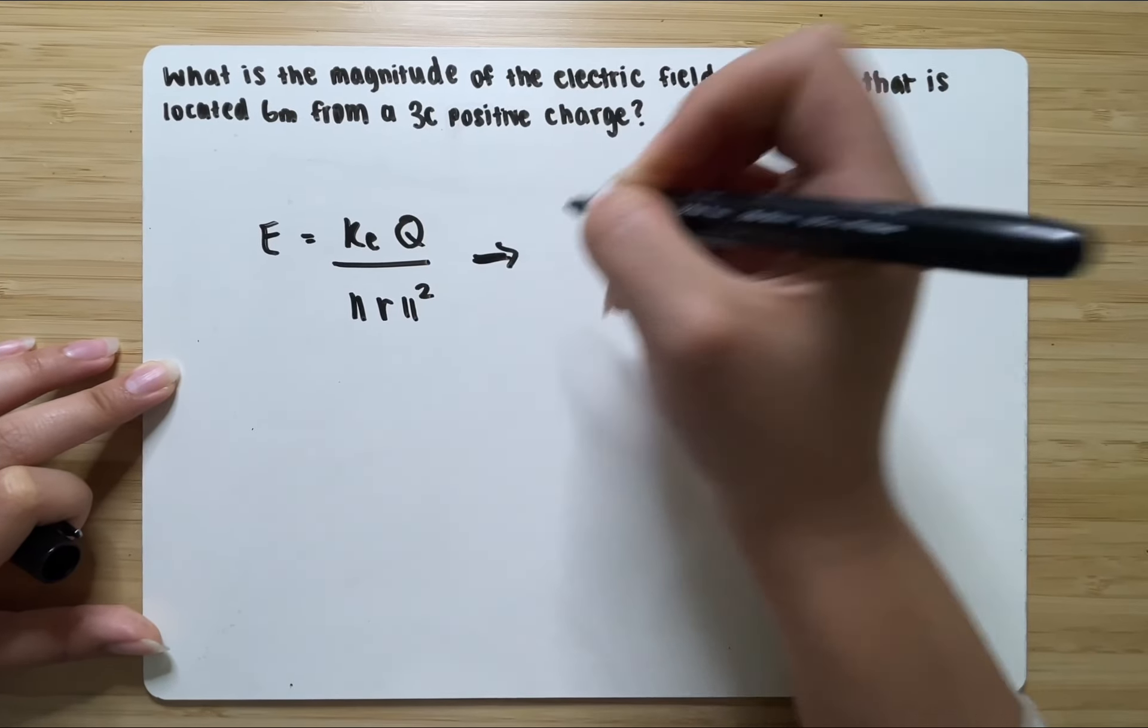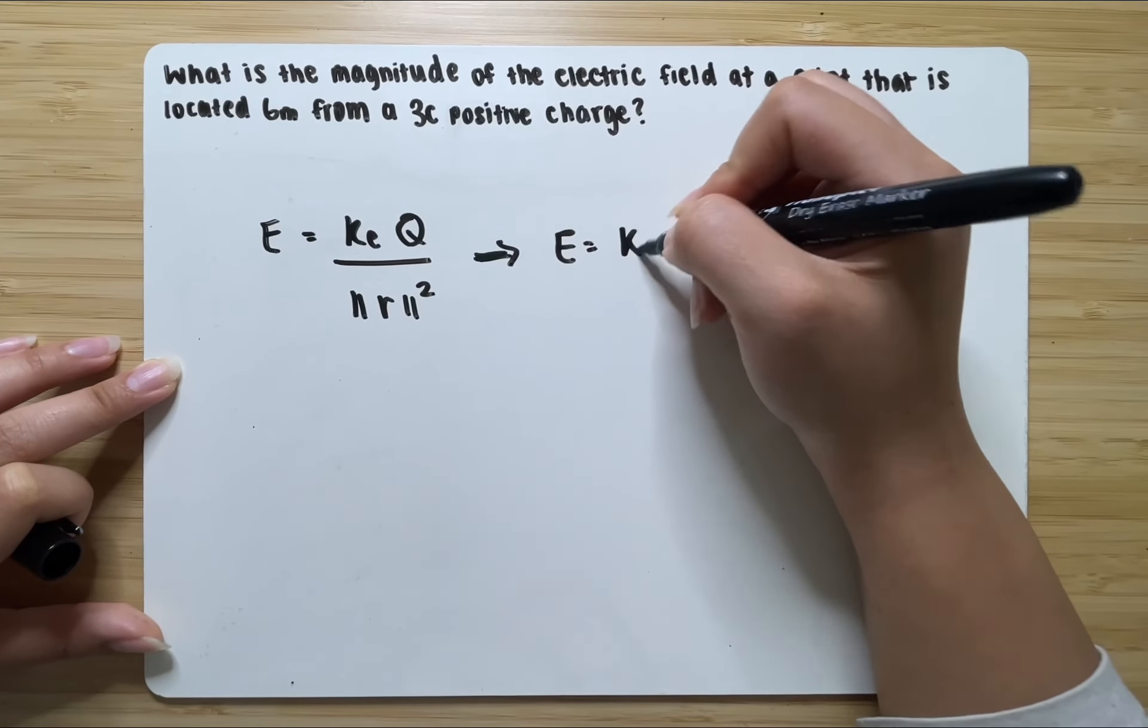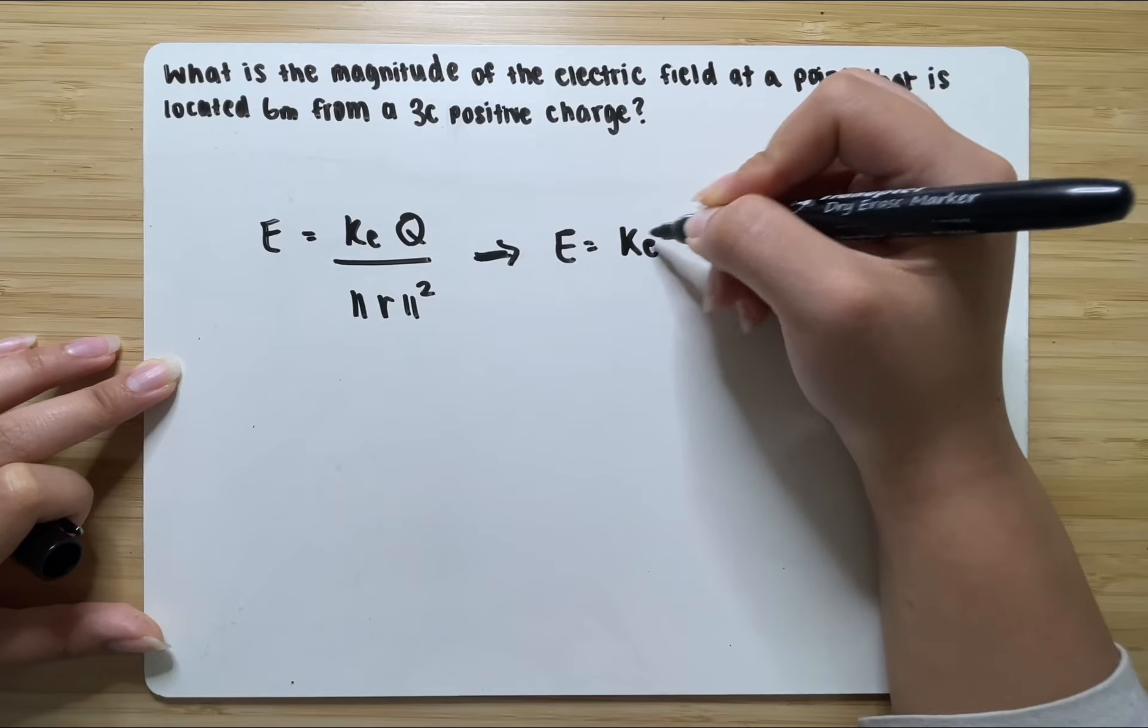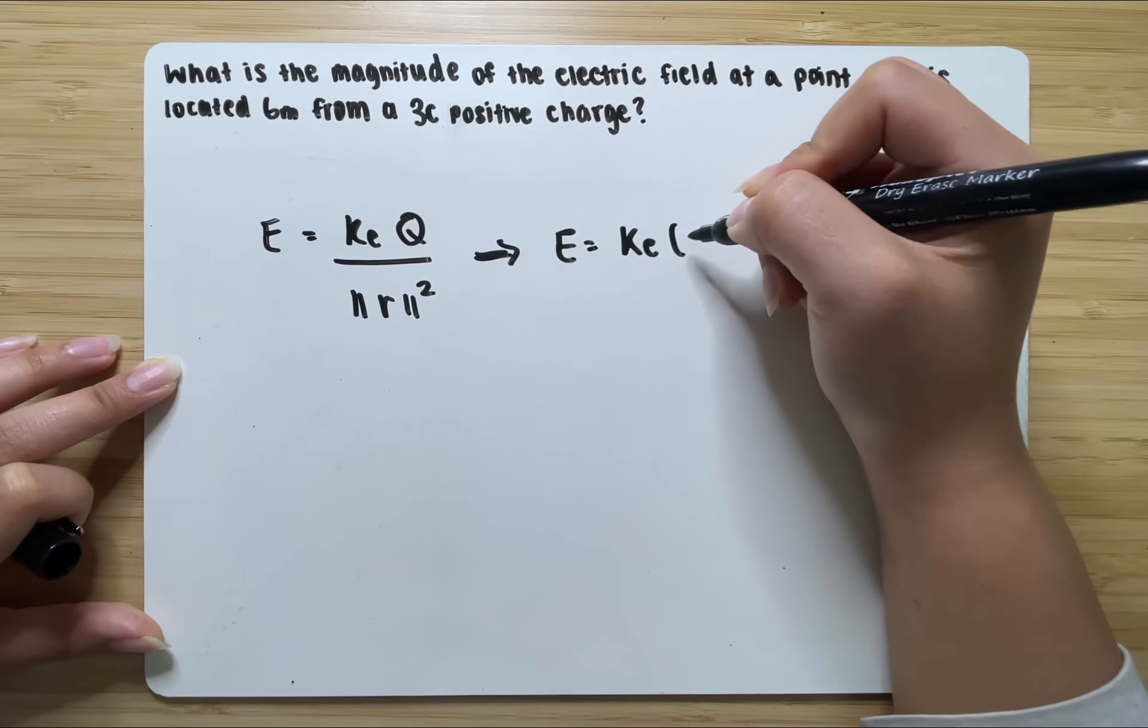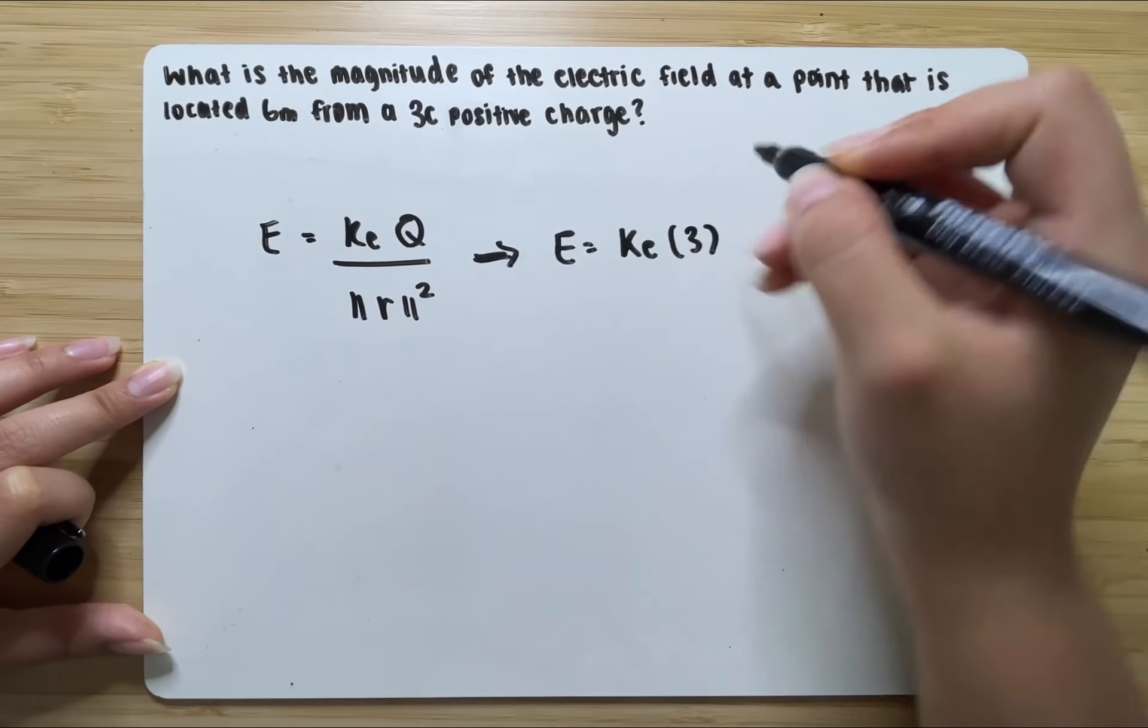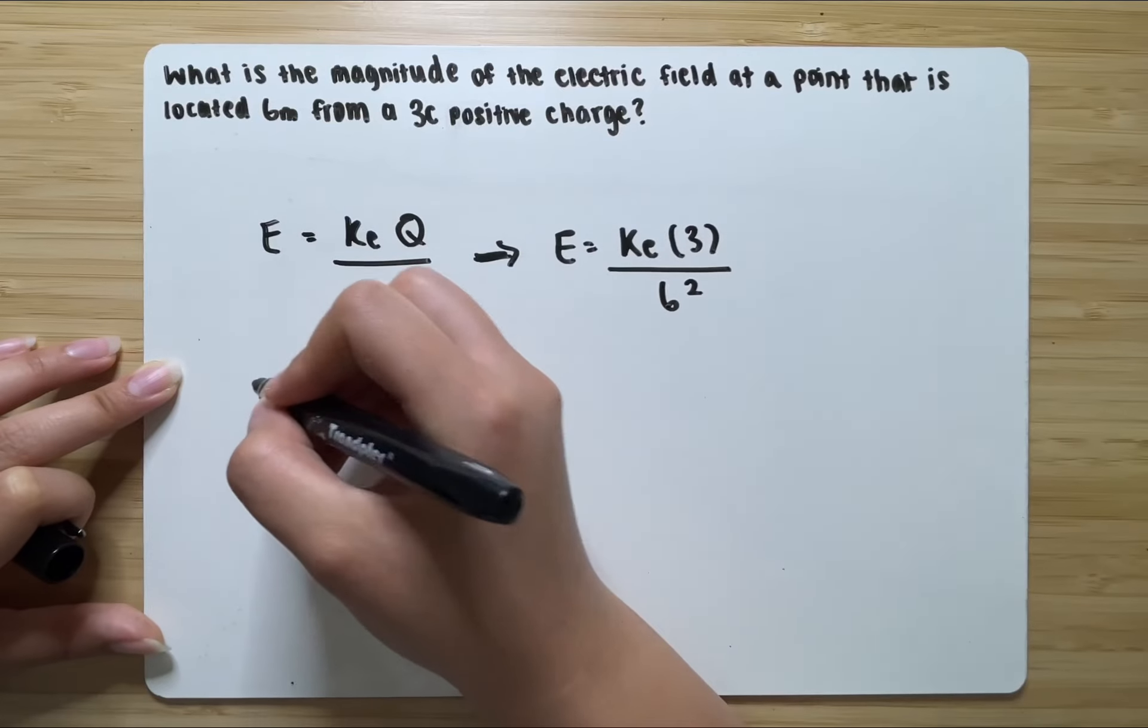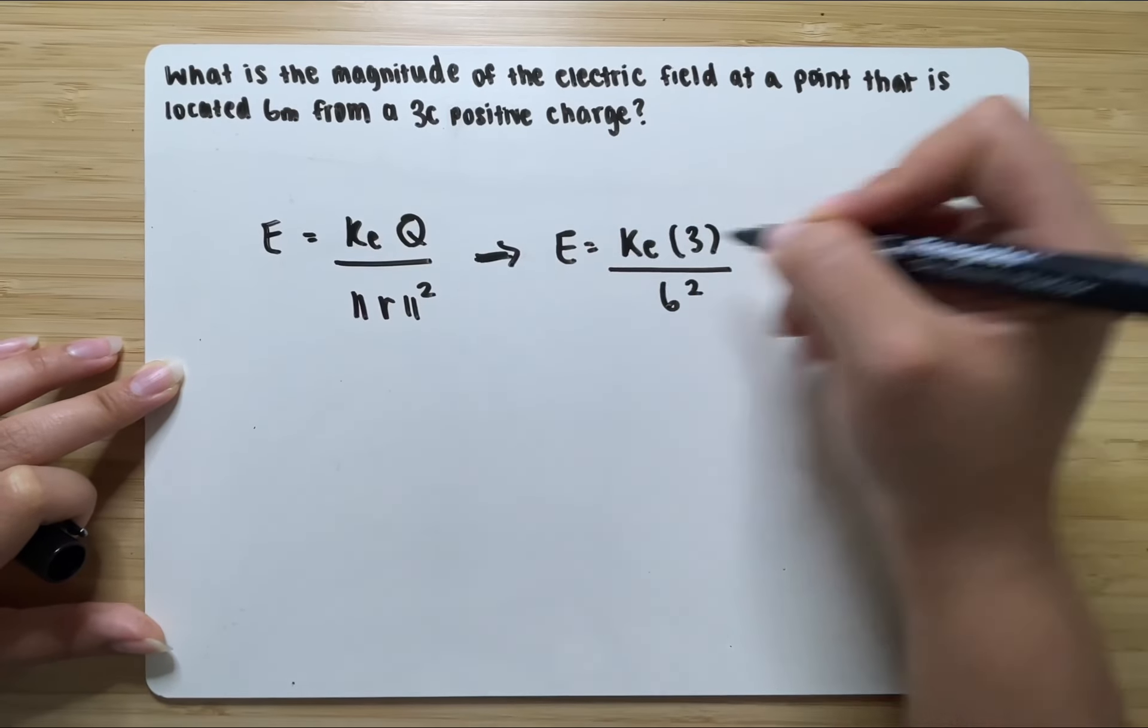So you have E equal to Ke, Coulomb's constant, multiplied by the point charge, which in this case is 3, over the distance, which is 6 meters squared. So you have E is